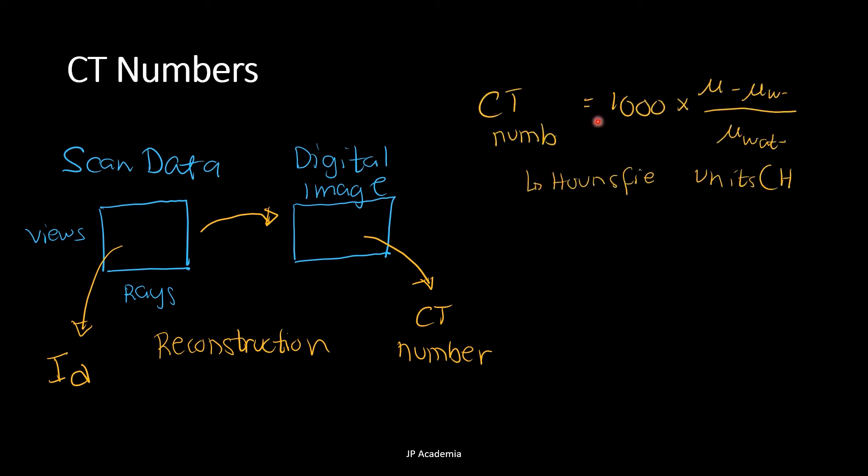The CT number is defined as follows. So this is equal to 1000 times mu, the attenuation coefficient at that specific point of the material, minus the linear attenuation coefficient of water over the linear attenuation coefficient of water. It has a unit of Hounsfield units, or HU.